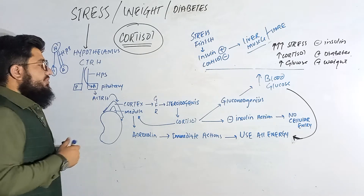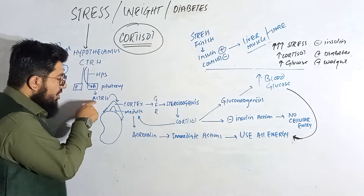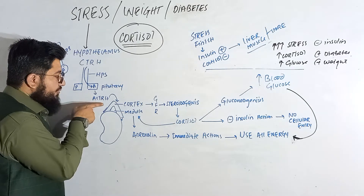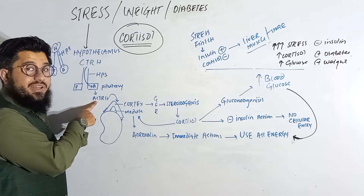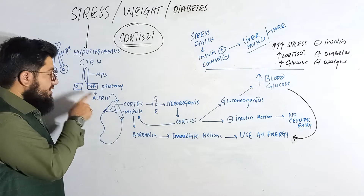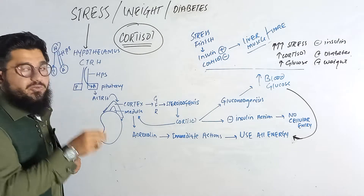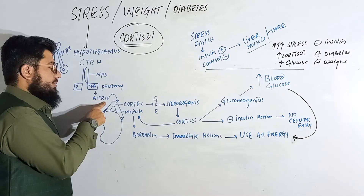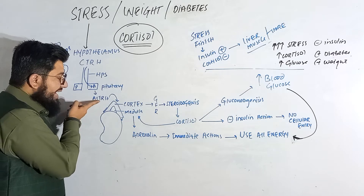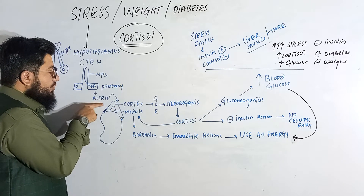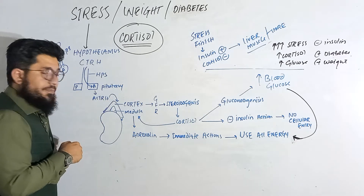In the anterior pituitary, there are several regions, and one of those regions is responsible for the synthesis of adrenocorticotropic hormone (ACTH). This hormone is released from the anterior pituitary. The name itself tells you its path — ACTH is a hormone that moves towards the adrenal cortex.